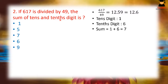The tenths digit is the digit that comes right after the decimal point. For 12.59, rounding to one decimal place gives 12.6. So the tens digit is 1 and the tenths digit is 6. The sum of both digits is 7, which is the correct answer.